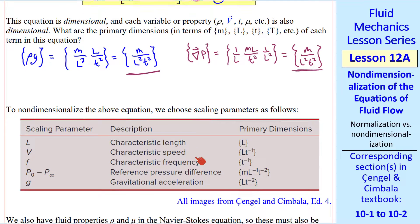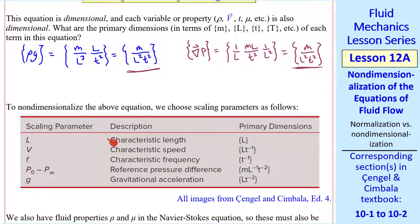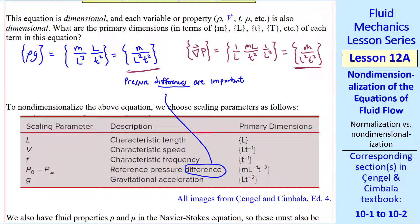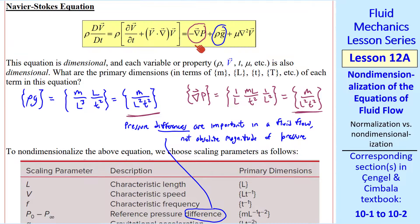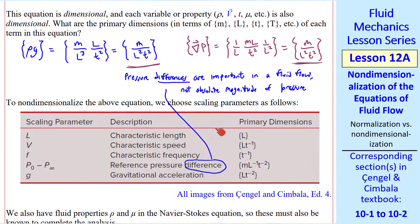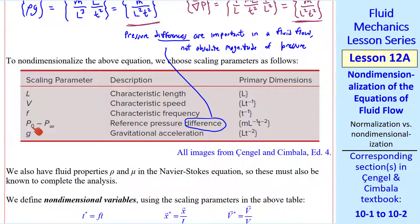To non-dimensionalize the Navier-Stokes equation, we need several scaling parameters. We've already defined a characteristic length l and a characteristic speed V — these are the primary ones. We'll also pick a characteristic frequency f and a characteristic reference pressure difference (p₀ minus p-infinity). We must talk about a pressure difference because pressure differences drive fluid flow, not the absolute magnitude. A gradient represents differences in pressure. p₀ is some reference pressure, p-infinity is typically the freestream pressure. We also have fluid properties rho and mu in the Navier-Stokes equation.